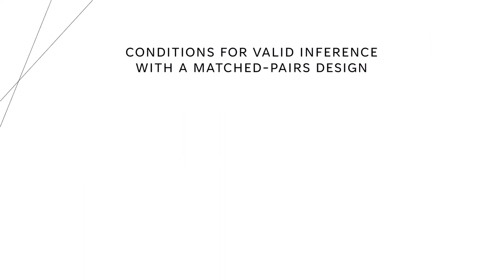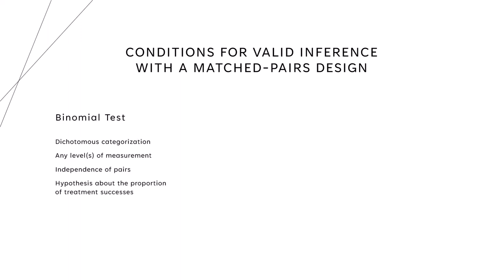Let me give you an example of this in a context that we've already looked at in past videos: the matched pairs design. The first test I presented for a matched pairs design is the binomial test. The conditions we need for the binomial test are dichotomous categorization,